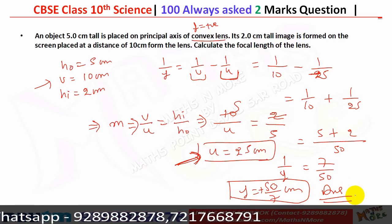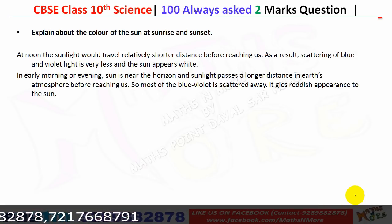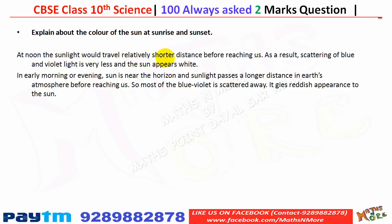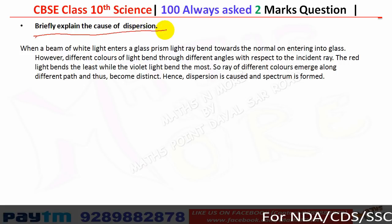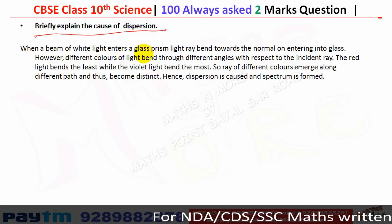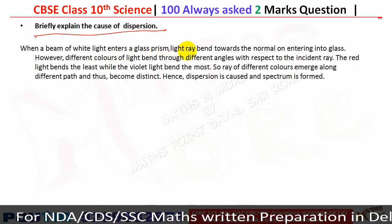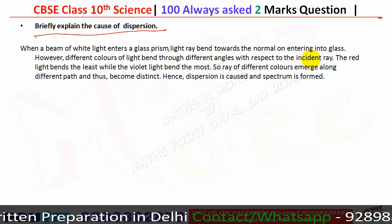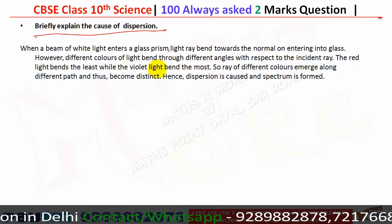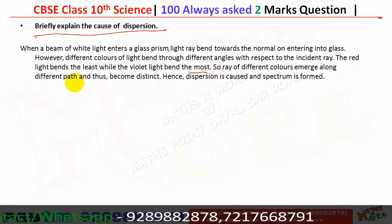At noon, sunlight travels a shorter distance through the atmosphere, so scattering of blue and violet light is very less and the sun appears white. In the early morning or evening, the sun is near the horizon and light passes a longer distance through the atmosphere, so most blue and violet light is scattered away, giving the sun a reddish appearance. Dispersion occurs because different colors of light bend through different angles in a prism — red bends least and violet bends most — causing the colors to emerge along different paths and forming a spectrum.